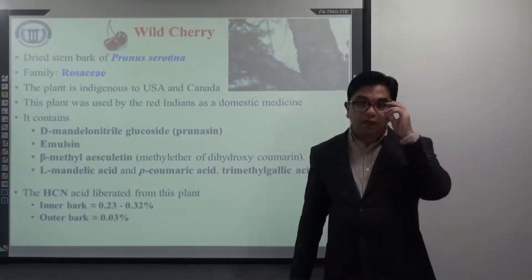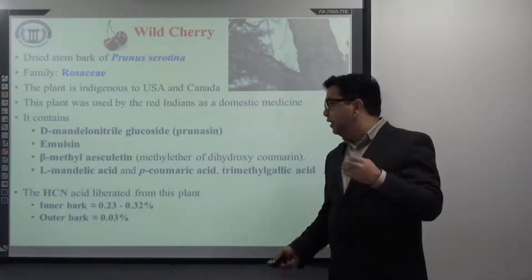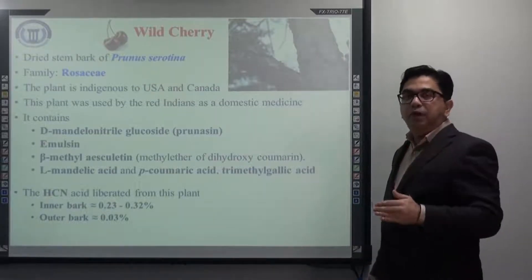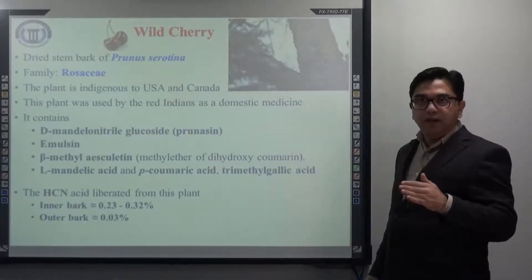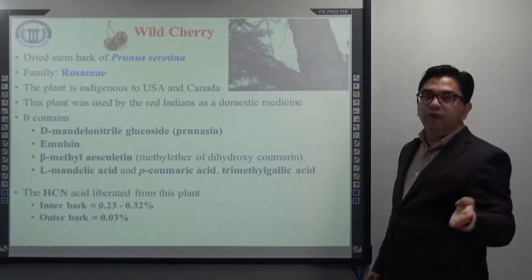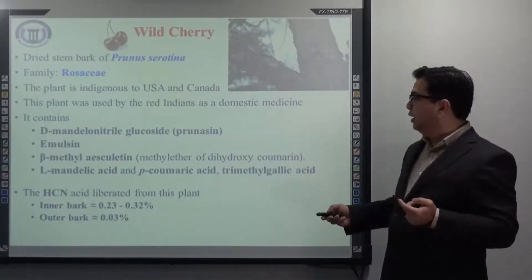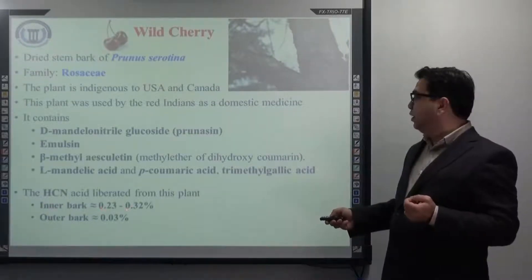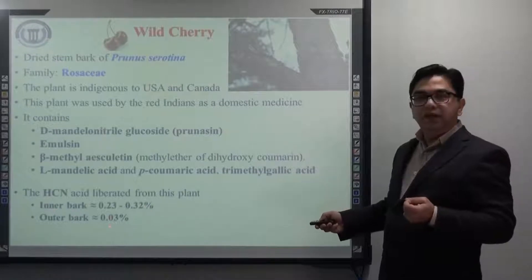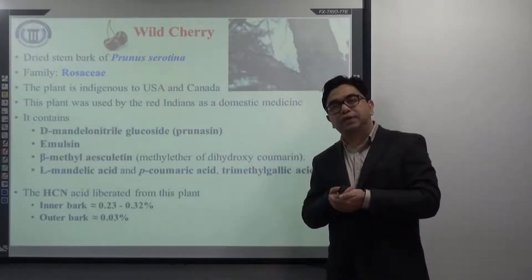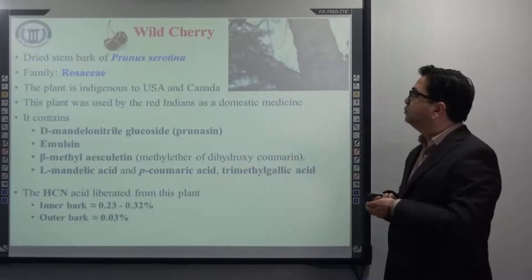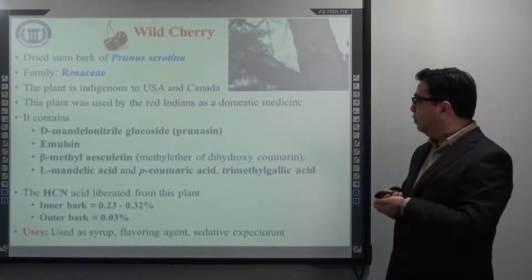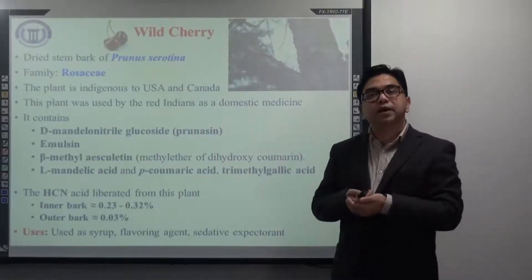Regarding the amount of HCN liberated from this plant, it has been observed that the inner part of the bark releases more as compared to the outer part. The inner part of the bark can release HCN up to 0.232 percent, as compared to the outer bark which can release up to 0.03 percent. Wild cherry is mainly used as a syrup flavoring agent and sedative expectorant.